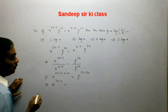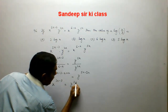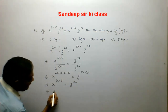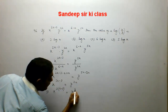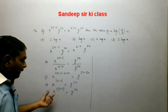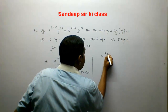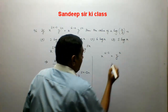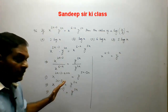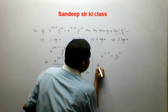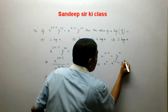So x to the power (3a minus 3) equals y to the power 3a. This can be written as x to the power 3 times (a minus 1) equals y to the power 3a. Applying power 1 by 3 on both sides (taking cube root), we get x to the power (a minus 1) equals y to the power a. Expanding the left side: x to the power a into x to the power minus 3 equals y to the power a.